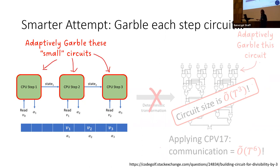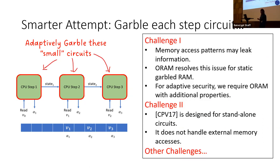Instead, we garble each CPU step circuit individually. For RAM programs, these step circuits are very small — size polylog(t) — so it makes sense to adaptively garble these small circuits rather than transforming the entire RAM program into one circuit. The challenges are: handling memory accesses, and the fact that step circuits are connected — each one takes as input the output of the previous step circuit and values read from memory. Adapting existing adaptive-security works to this setting is not straightforward.